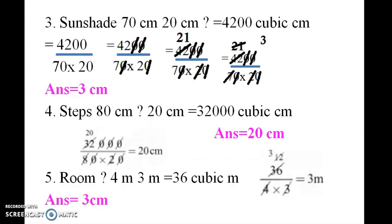Sunshade is 70 and 20. The answer is 1. 42 equals 12 equals 21. 21 equals 7 times and 3 times. So the answer is 3.